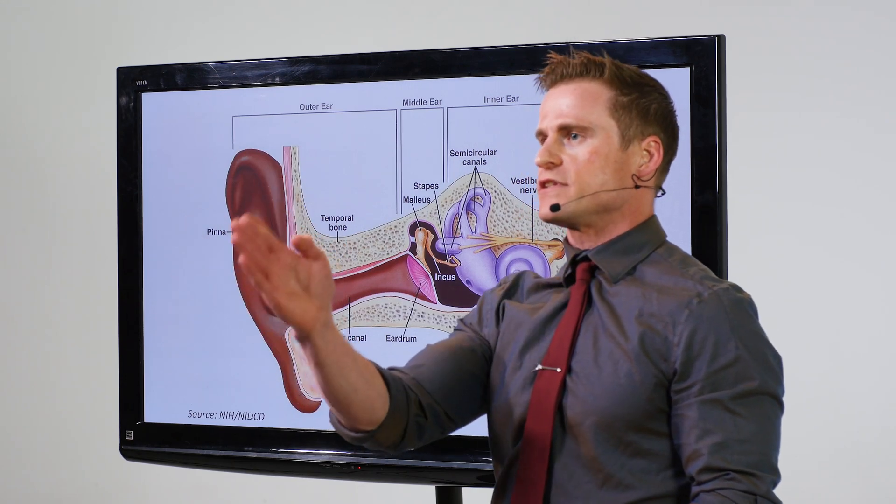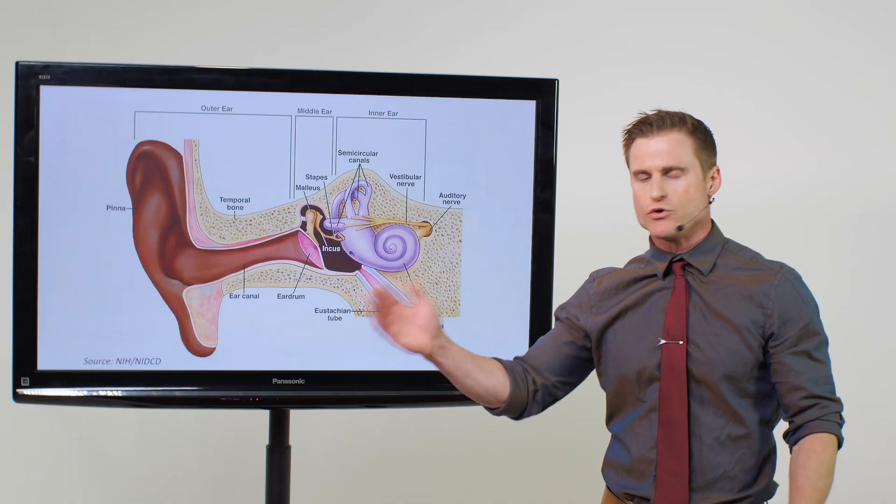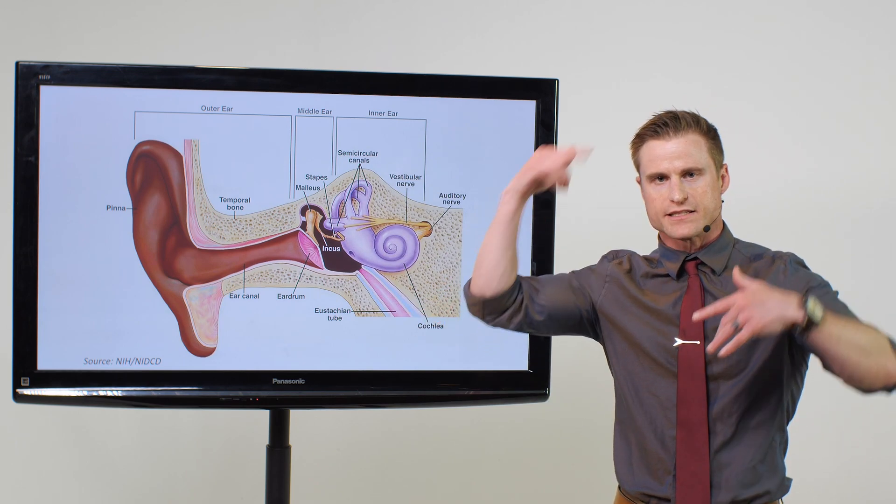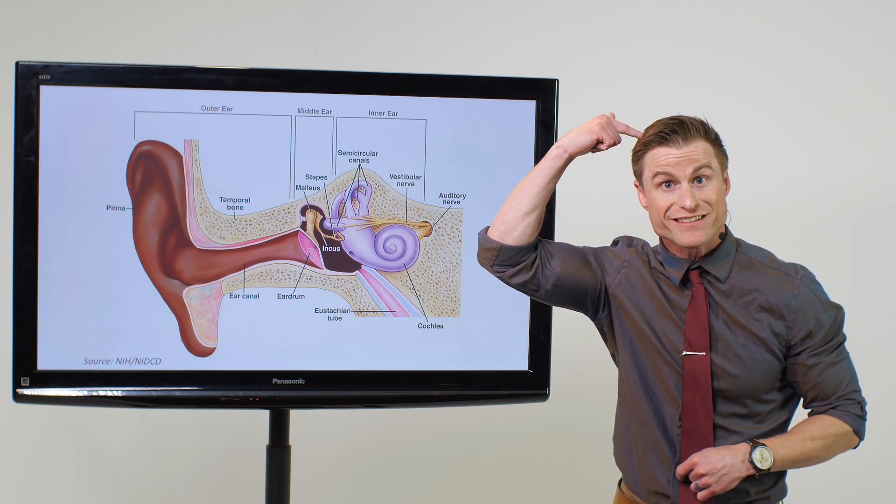We can hear different frequencies or different pitches. If you have a hearing loss at one of those frequencies, then your brain isn't being stimulated in that frequency region. So what your brain does to compensate is it creates its own internal noise.